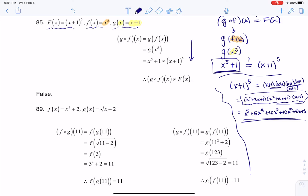So g of f of x is not equal to capital F of x. Let me just reiterate: g of f of x was equal to x to the fifth plus one. Capital F of x, if I foiled everything out, is x to the fifth plus 5x to the fourth plus 10x cubed plus 10x squared plus 5x plus one.